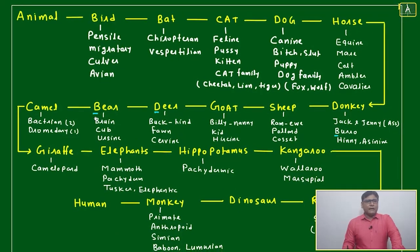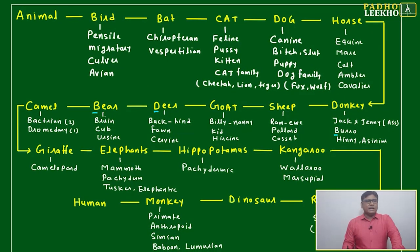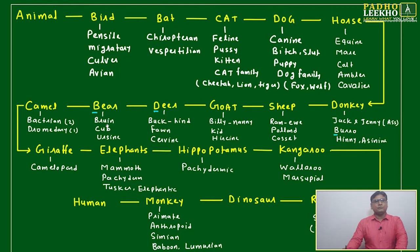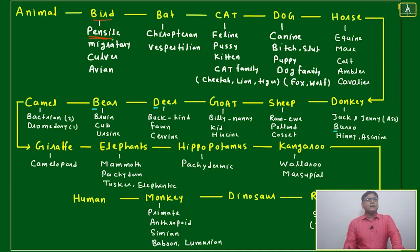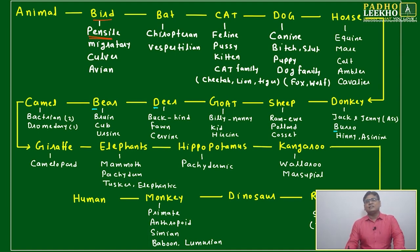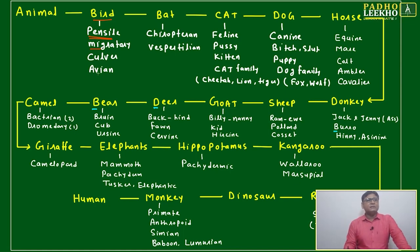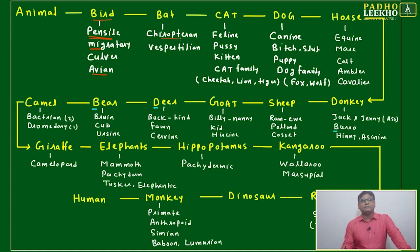Welcome to this flow diagram to understand all categories of animals which are frequently used or you can encounter. First is bird — any word related to bird: migratory, avian — all these are related to bird.